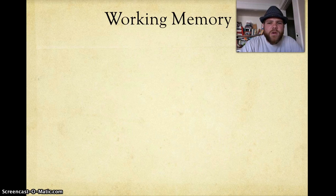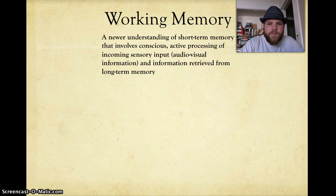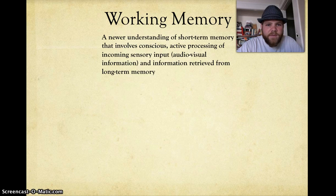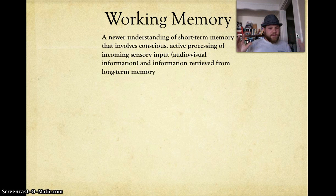Over the years, scientists have come to a newer, more sophisticated version of short-term memory called working memory. Scientists have found that there are three main areas involved in working memory. Basically, this is a newer understanding of short-term memory that involves conscious, active processing of incoming sensory input — meaning audio-visual information from the senses — and information retrieved from long-term memory. We could see working memory as the intermediary between sensory input on one side and long-term memory on the other.